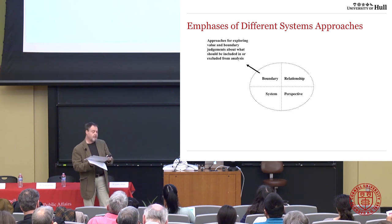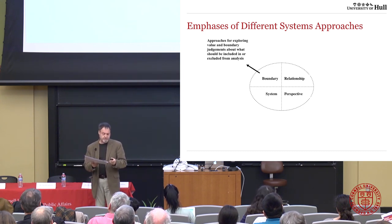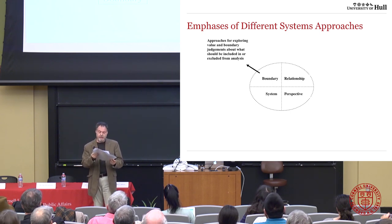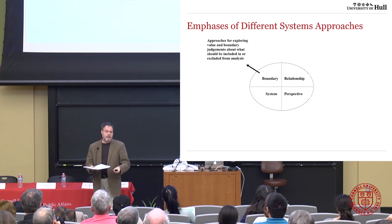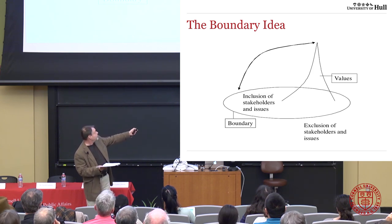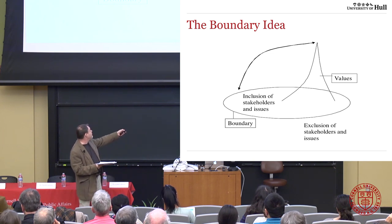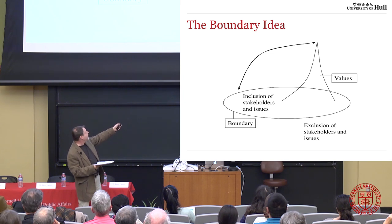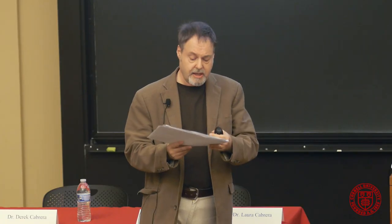Let me start with approaches for exploring values. This diagram represents perhaps the fundamental theoretical idea behind systems approaches that talk about exploring boundaries. The boundary here represents the inclusion of stakeholders and the issues that matter to them, and it also defines what's excluded. This part represents values, and values tend to drive the setting of boundaries — by exploring people's value judgements you can begin to get a better sense of how to draw boundaries on a project.